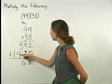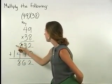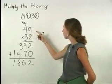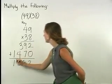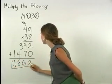1 plus 3 plus 4 is 8. And 0 plus 1 is 1. So 49 times 38 is 1,862.